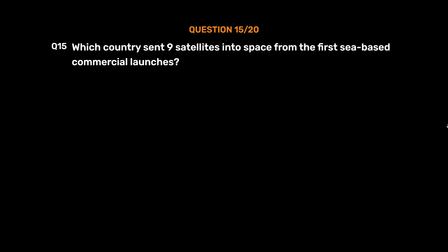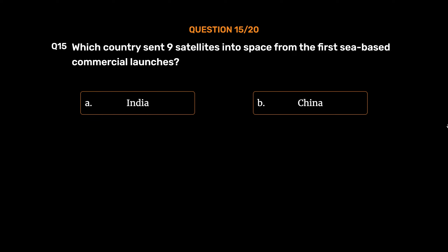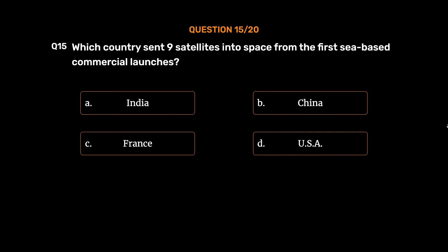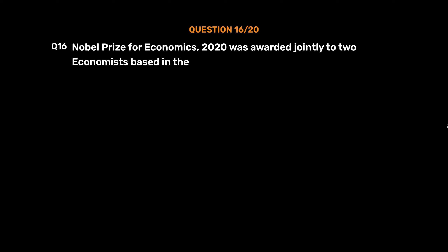Question No. 15: Which country sent nine satellites into space from the first sea-based commercial launches? Option A: China. Option B: China. Option C: France. Option D: USA. The correct answer is Option B: China.